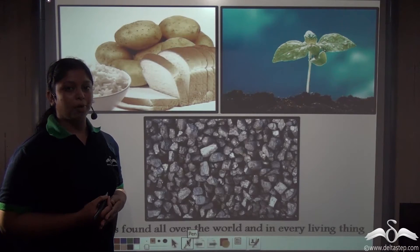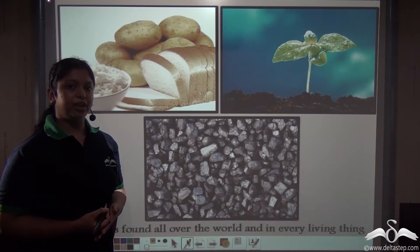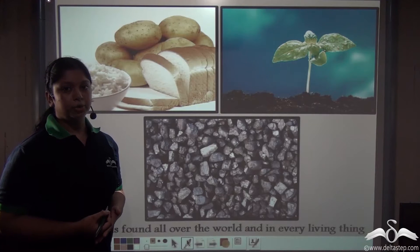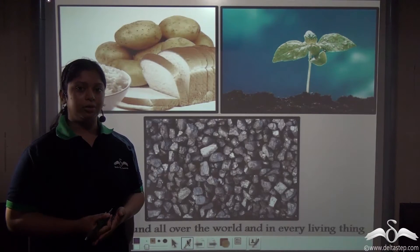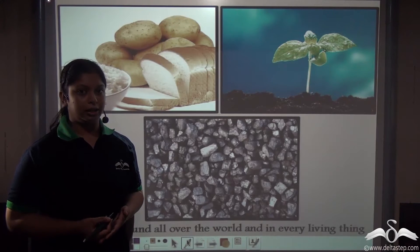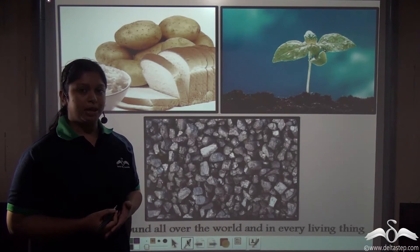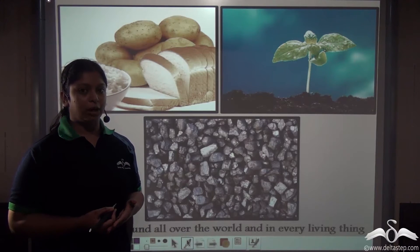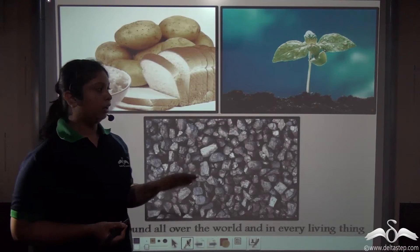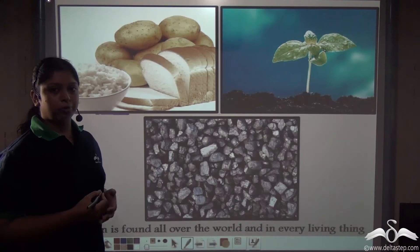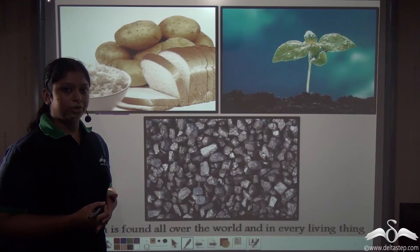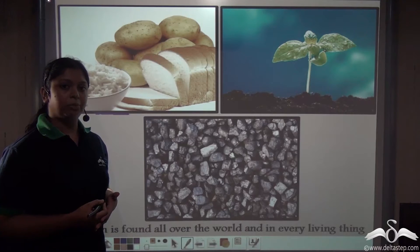Carbon is one of the most important elements found all over the world and in every living thing. We human beings, animals, and plants require carbon directly or indirectly. Carbon is present in combined forms in a variety of substances in our day-to-day life. For example, the staple food we consume like rice, bread, and potato contains a rich source of carbon known as carbohydrates.